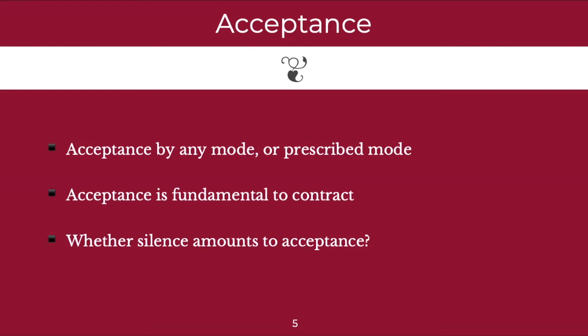It is important to understand that acceptance is fundamental to a contract. What this means is that without a person accepting the offer, either explicitly or implicitly, there cannot be a legally binding contract. The question then becomes whether silence amounts to acceptance. And yes, in some cases, silence does amount to acceptance. For example, if I want to buy a particular horse, and I say that the owner of the horse must keep quiet if the horse is in a sane condition, and the owner of the horse does keep quiet, then their silence amounts to acceptance. There are various other examples where silence can also amount to an acceptance to a contract.